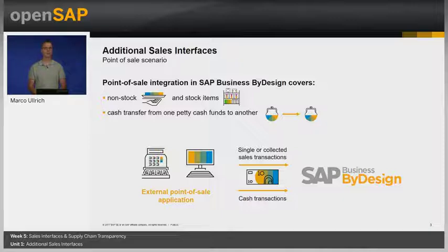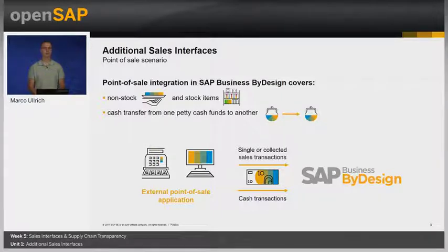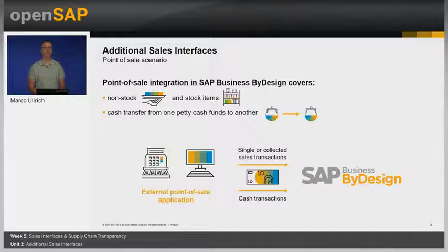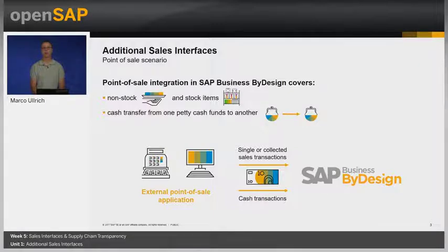For the point-of-sales feature, two types of transactions are offered: retail and petty cash. Retail covers the sale of an item via certain means of payment, like cash, credit card, customer invoice, and others. After the payment, a periodic data transfer from the point-of-sales application can be initiated. If the consistency check is successful, an automatic release can be done. Otherwise, adjustments might be necessary.